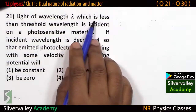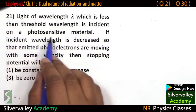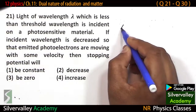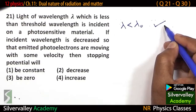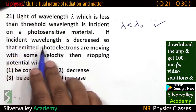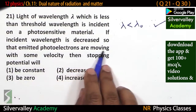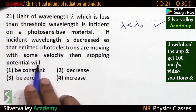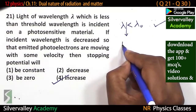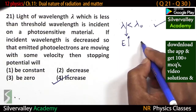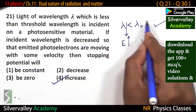Light of wavelength lambda, which is less than the threshold wavelength, is incident on a photosensitive material. Wavelength less than threshold wavelength means there is emission of electrons. If the incident wavelength is decreased so that emitted electrons are moving with some velocity, then stopping potential will increase. Lambda decreases means energy increases, and energy increases means stopping potential should increase.